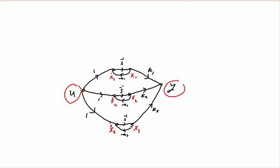So it's three states. Controllability — roughly speaking — is the effect of this control input on all these states, or the derivatives of the states. That is controllability. If you have some effect on all the states, the system is controllable.